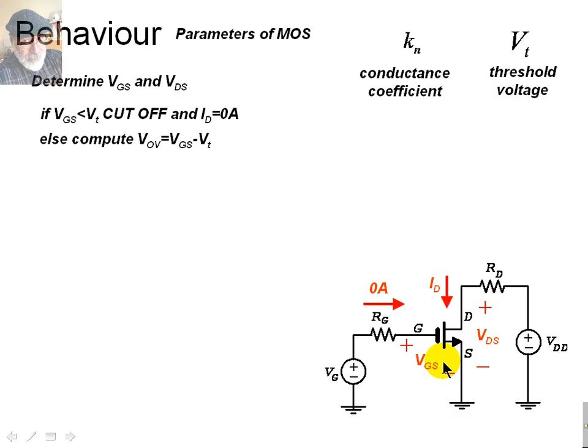However, if that voltage, VGS, is not less than the threshold voltage, there will be current in the channel. In that case, we need to compute how much higher than the threshold voltage the VGS is. We compute what is called the overdrive voltage. VGS, this one, minus VT, that one over there. And then we compare the channel voltage, VDS, to that overdrive voltage. If it's below the overdrive voltage, we say that the transistor operates in one mode. If it's greater than the overdrive voltage, then it operates in a different mode.